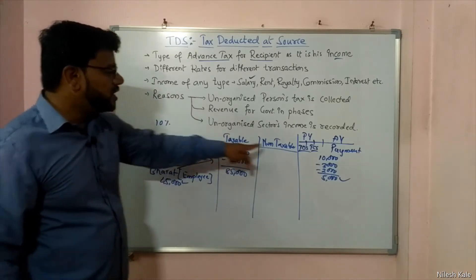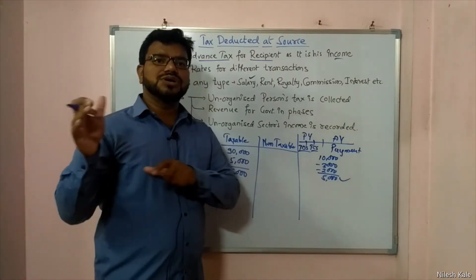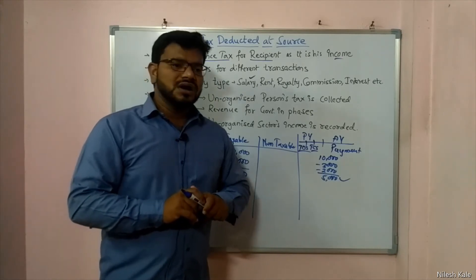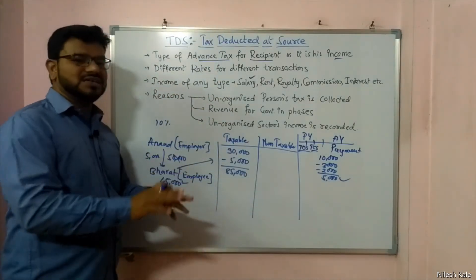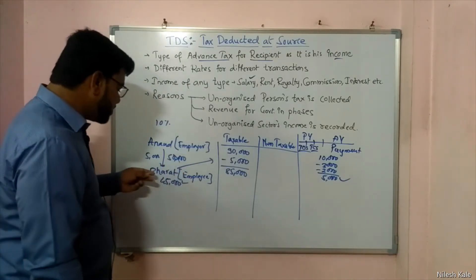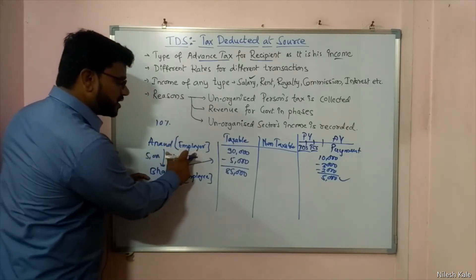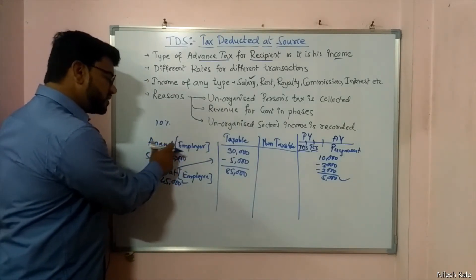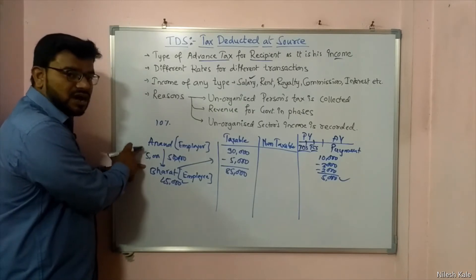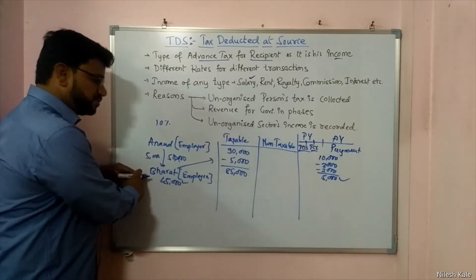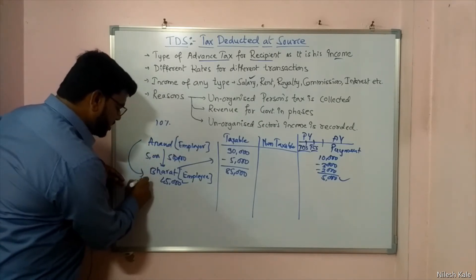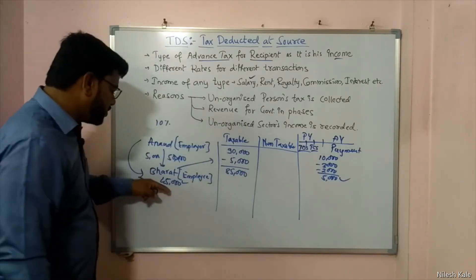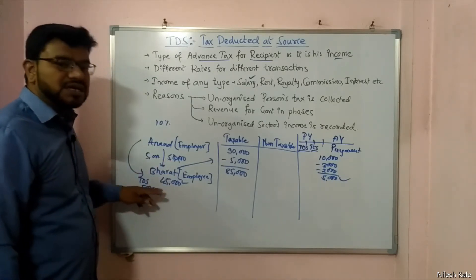Now, Bharat is a non-taxable person. Bharat's income is so low that yearly income is less than 2,50,000 and he doesn't have a tax return to file. So what will happen? He doesn't get the 5,000 back automatically because it has already been cut. The employer — Anand — will file his own returns, and in his returns, whatever TDS he has cut, this 5,000 will be paid in the name of Bharat. And Anand will give Bharat a TDS form with all details of the payment: 50,000, 45,000, and 5,000.